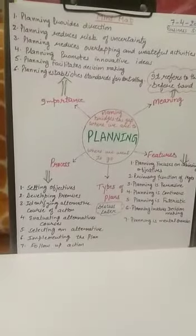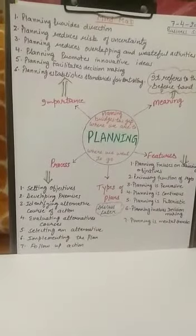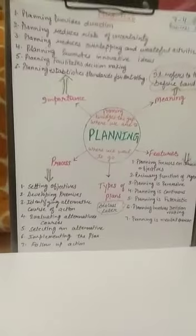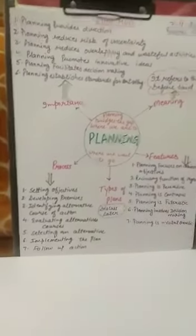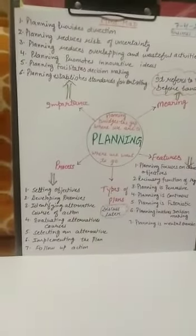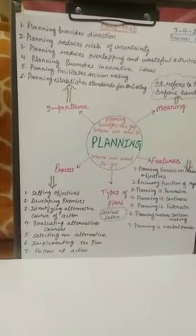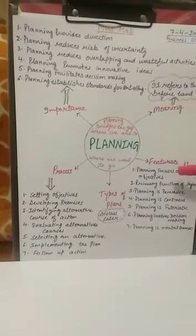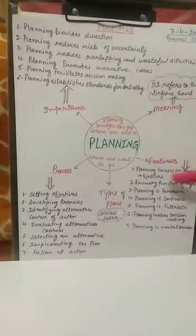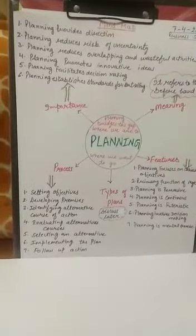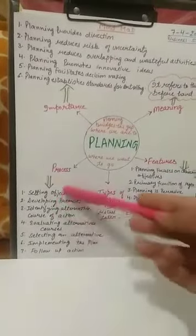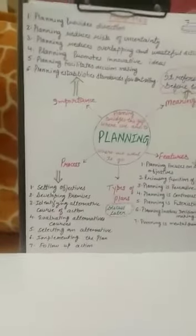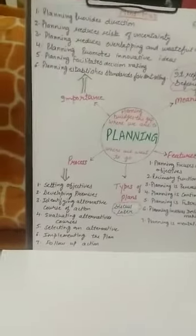Good morning dear students, this is Paramjit. Today my topic is the process — this is the mind map of the chapter Planning, Unit 4. This is my fifth lecture and we have already done meaning, features, importance, and limitations. Today we will discuss the process and types of plan. We will discuss the process first.